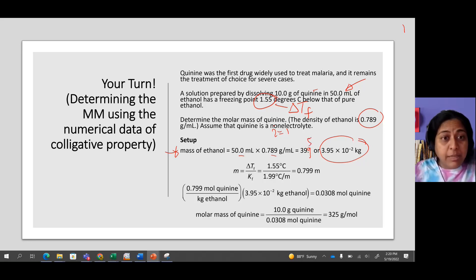Next, we calculate the molality. Now we are going backward, right? Molality equals the change of freezing point divided by the Kf. Are we given the Kf? Yes, we are given the Kf for ethanol.